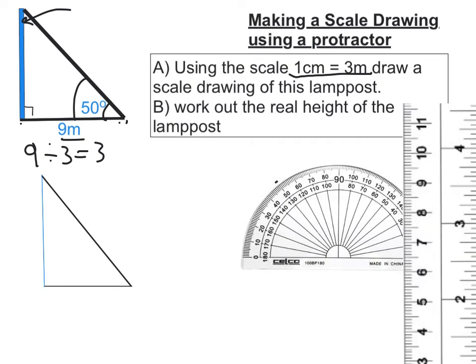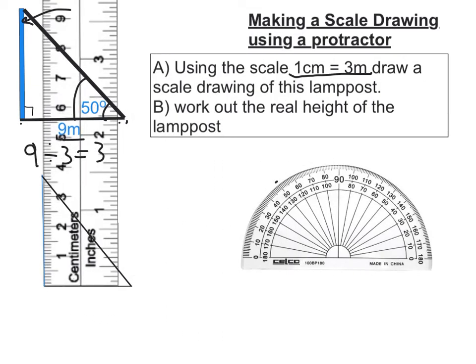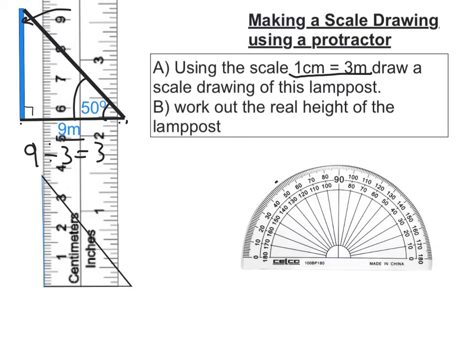Now for part B, work out the real height of the lamppost. First, measure how high the lamppost is. Put my ruler back. From here to here is 3.7 centimeters.